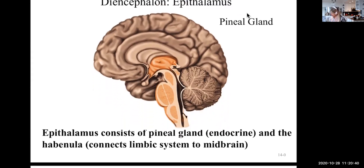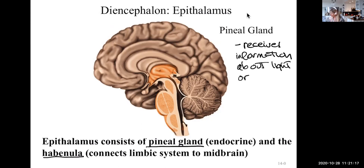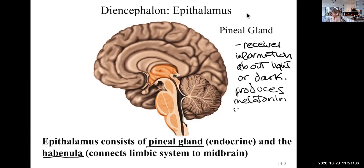The epithalamus consists of the pineal gland — also just called the pineal gland — and a structure called the habenula, which connects the limbic system to the midbrain. The pineal gland was called the seat of the soul by René Descartes. What it does is receive information about light or dark in your general vicinity and produces melatonin in response — it's the only place in the body that produces melatonin — to regulate sleep in response to darkness.